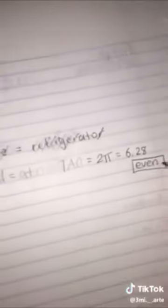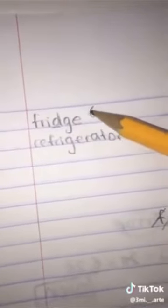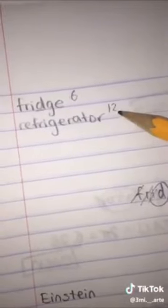And that is an even number. Now, you may be asking, why am I pointing out that this is an even number? Well, let's just look back here. Fridge has six letters in it, and six is an even number. And refrigerator has 12 letters in it, and that is also an even number.